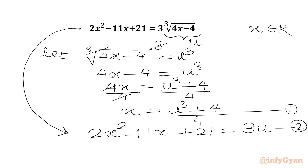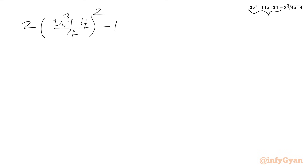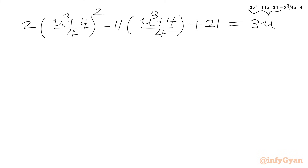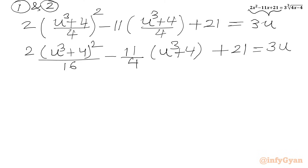Substituting from equation 1, we get 2 times (u cubed plus 4 over 4) whole squared, minus 11 times (u cubed plus 4 over 4), plus 21 equal to 3u. This simplifies to 2 times (u cubed plus 4) squared over 16, minus 11 over 4 times (u cubed plus 4), plus 21 equal to 3u.